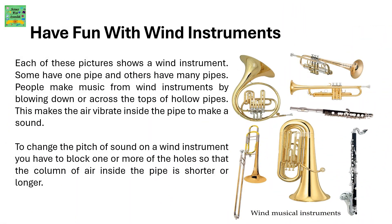Now let's look at wind instruments. You already know a few wind instruments — for example, a flute. Each of the pictures shows a wind instrument. Some have one pipe and others have many pipes. People make music from wind instruments by blowing down or across the tops of hollow pipes. This makes the air vibrate inside the pipe to make a sound. To change the pitch on a wind instrument, you have to block one or more of the holes so that the column of air inside the pipe is shorter or longer.